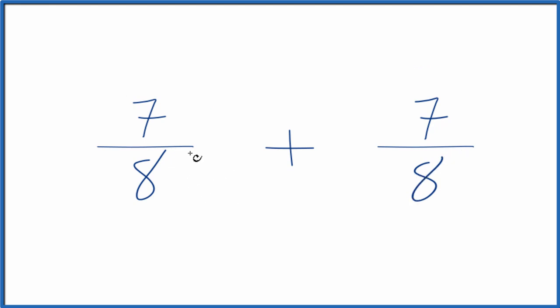When we're adding fractions, if we have the denominator the same, then all we have to do is add the numerators and then just keep the denominator as it is, in this case 8. So that makes this kind of easier for us here.